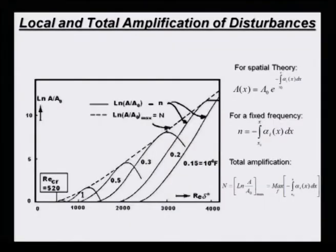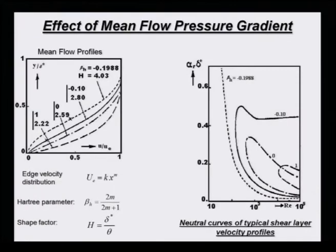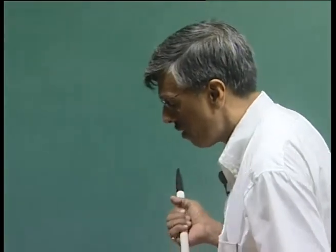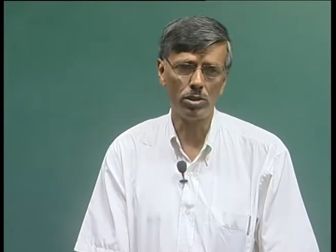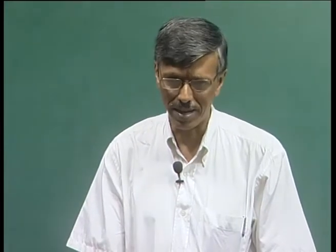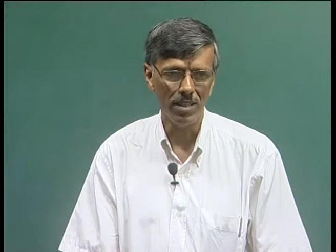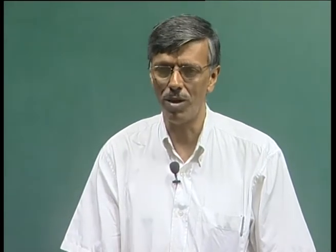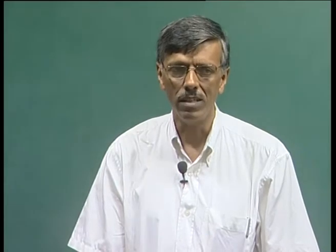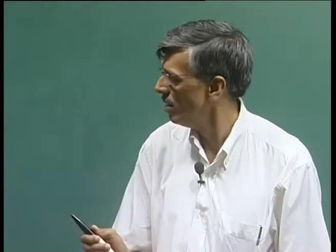Lots of experiments have been done and people have tried to correlate this factor capital N, figuring out whether the flow has undergone transition or not. For example, for a zero pressure gradient boundary layer, people have found out that when capital N takes a value of about 8 to 9, that is where you should expect transition to occur. But let me warn you up front that this is too empirical, because it does not tell you anything about a_naught. Are we saying that irrespective of any tunnel, or even in the same tunnel at different speed, we are going to see the same behavior? That is something we will discuss.